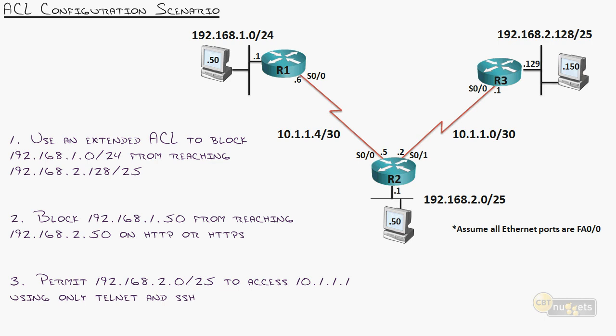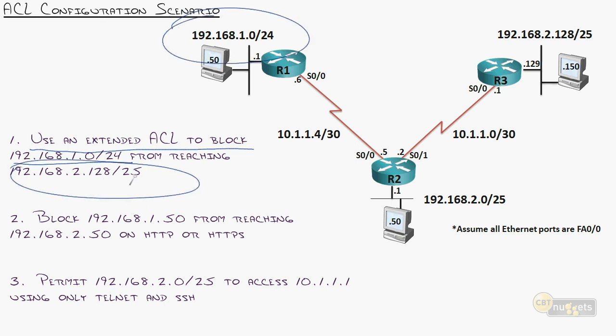Same topology as before, so we can focus on the access list concept, not relearning what the network looks like. We've got five scenarios, three of which are on the screen right now. Number one: use an extended access list to block 192.168.1.0/24 from reaching 192.168.2.128/25. Is it possible to do that using a standard access list? Yes, absolutely. However, we can be a lot more efficient, and it's the norm to be using extended access lists for these kinds of things.